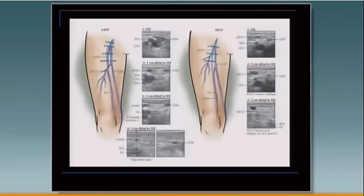The circumflex vein, however, since it travels obliquely, you see here it's originally aligned with the femoral vessels, and as one scans down it drifts off laterally. Here's the deep vessels. Here's the circumflex going oblique.